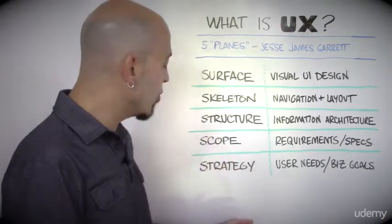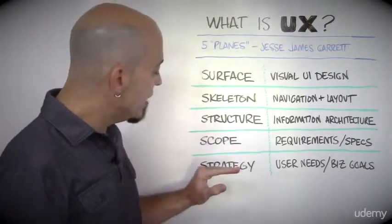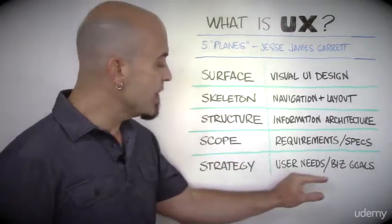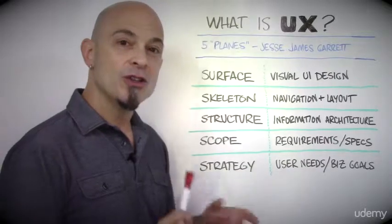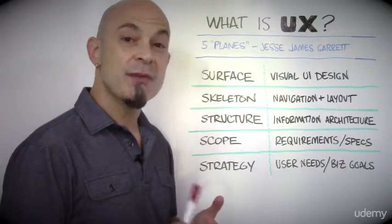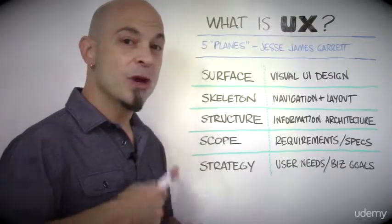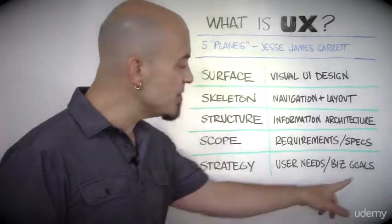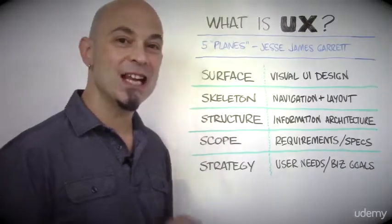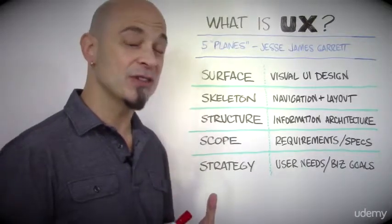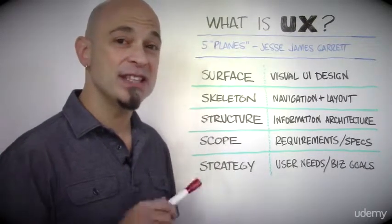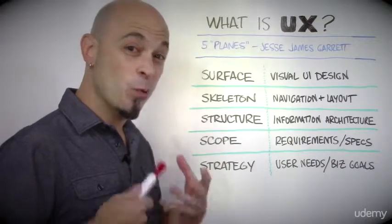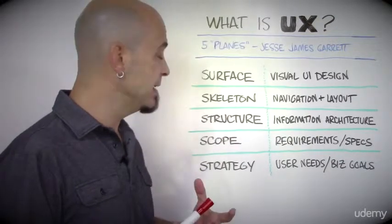We'll walk you through each plane real quick. In the strategy plane, we are thinking about user needs and business goals. What do people want from this? What do they expect from it? And what does the business need to get in return — are we talking about making money, saving money, gaining efficiency of some kind?